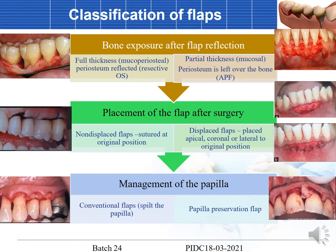Based on bone exposure after flap reflection, flaps are classified as full thickness or partial thickness. In a full thickness flap, the periosteum is elevated along with the flap. In a partial thickness flap, the periosteum is left behind on the bone surface.